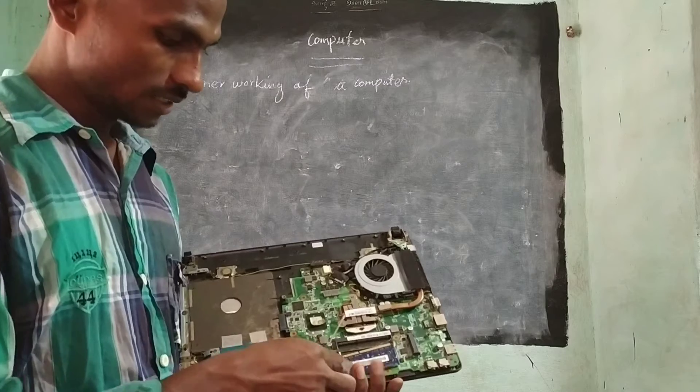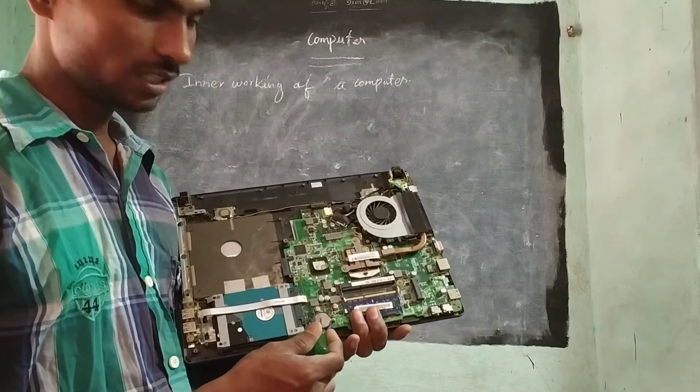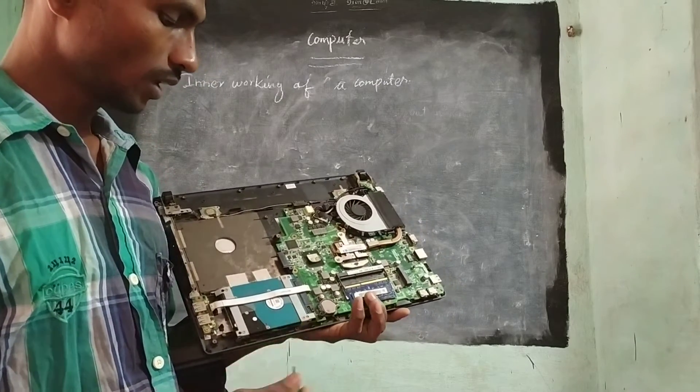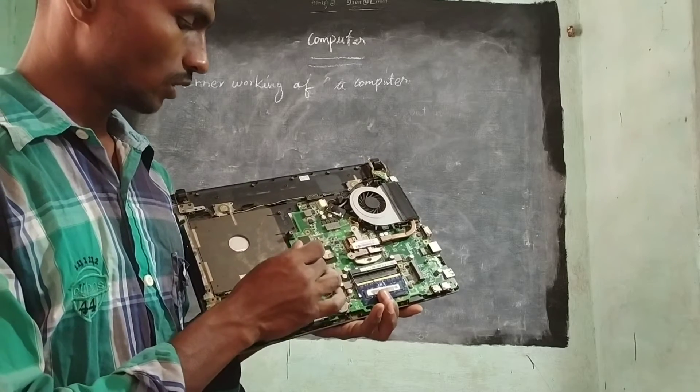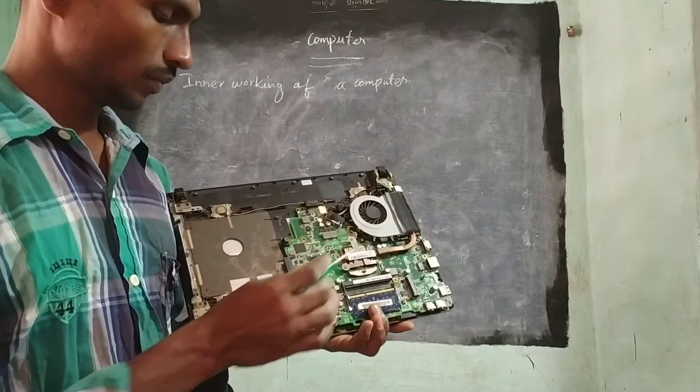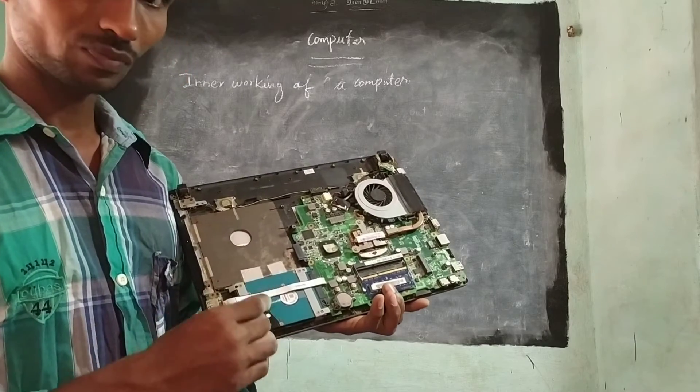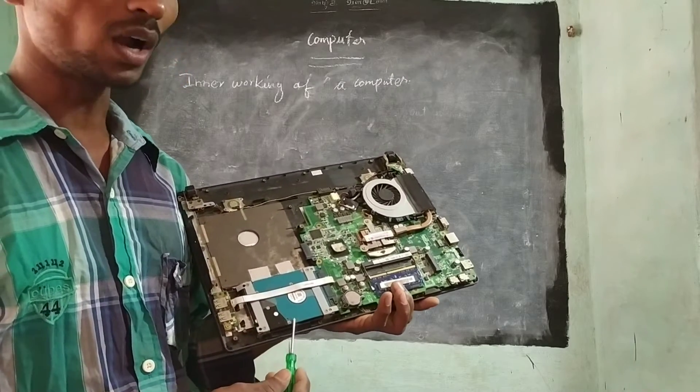Next, it is the CMOS battery. It is the mini battery inside the computer. Next, these are the RAM ROM we have said. That is like that only. Next, it is the hard disk.